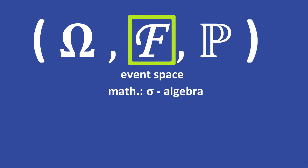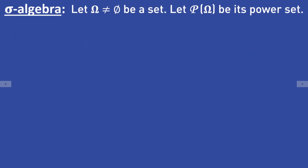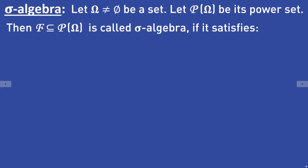First I will show you how a sigma algebra is defined. Let omega be some non-empty set and let P of omega represent its power set. The power set of omega is the set of all subsets of omega. Then a subset F of the power set — that means F is a set of subsets of omega — is called a sigma algebra if it satisfies the following three properties.